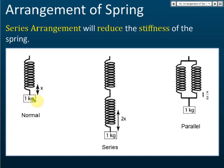For example, with one normal spring under a 1 kg load, the extension is x. If two identical springs are arranged in series with the same 1 kg load, each spring extends x, so the total extension becomes 2x. Extending more means the stiffness is lower.